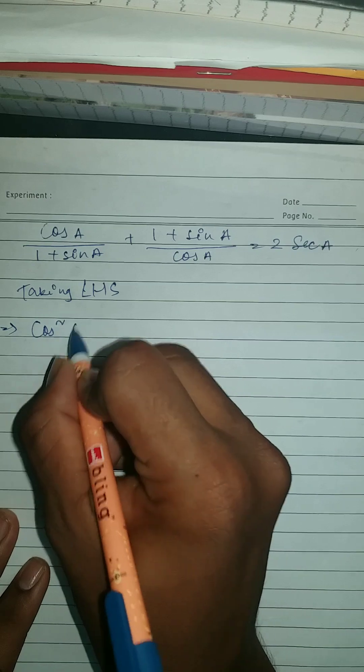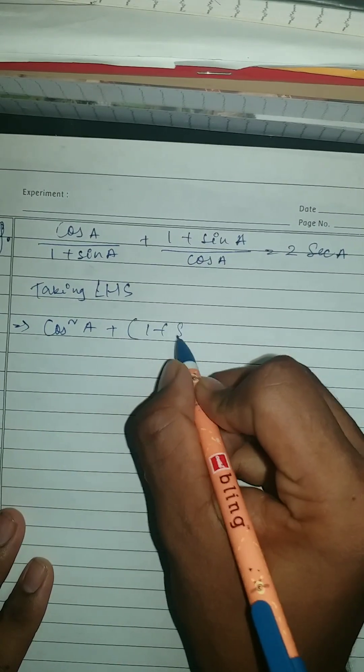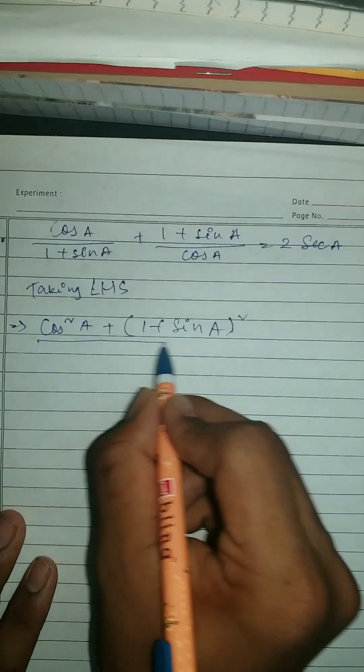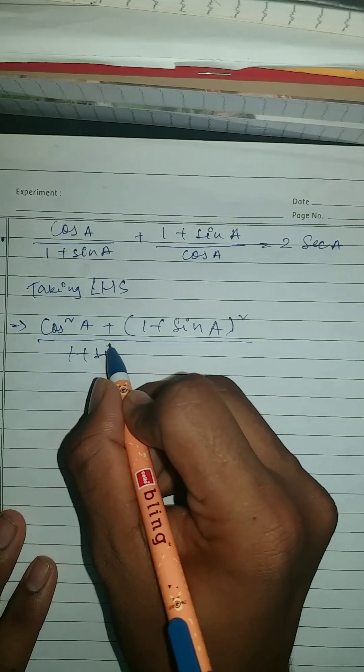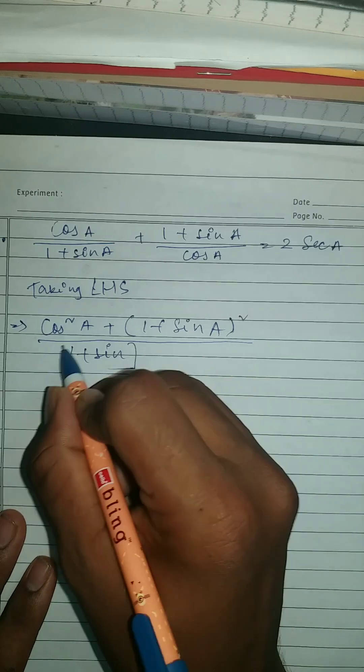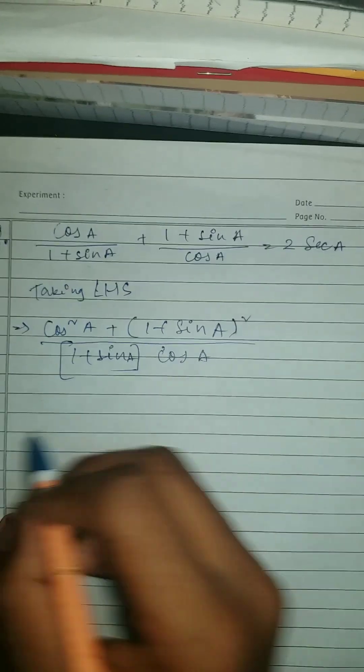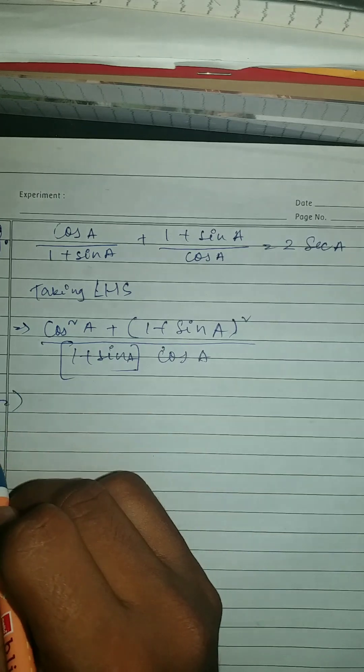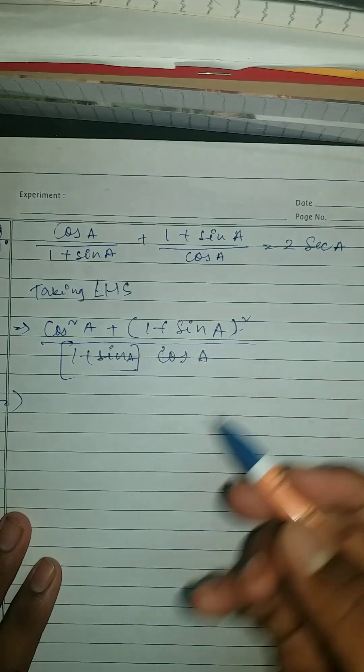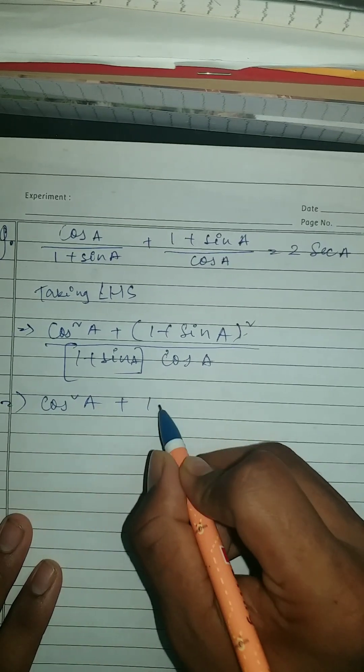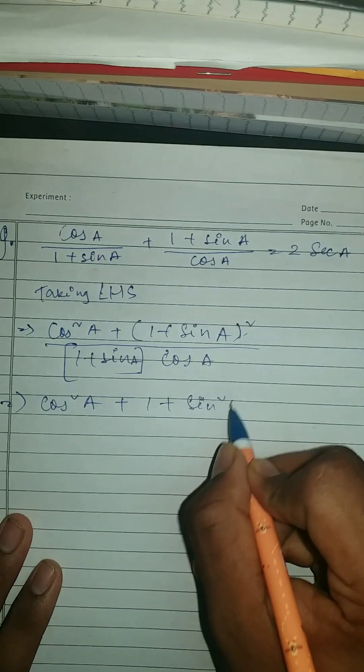So cos squared A plus (1 plus sine A) whole squared upon 1 plus sine A, and here cos A. Now what we're going to do is open this whole square, which is cos squared A plus 1 plus sine squared A.